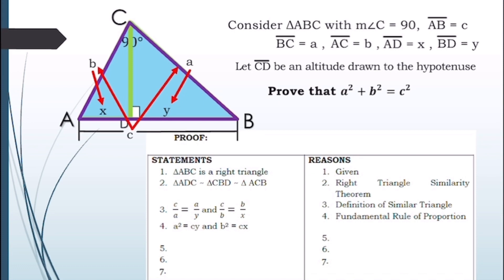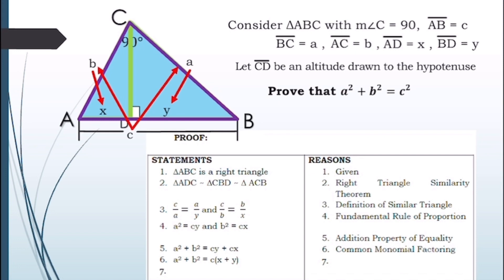Applying the addition property of equality, we now have a² + b² = cy + cx. The reason is the addition property of equality. For our sixth statement, applying the common monomial factor to the right side, it becomes a² + b² = c(x + y), where the common monomial factor is c.